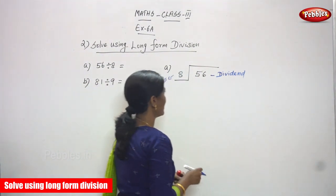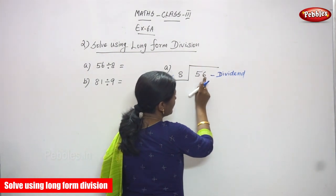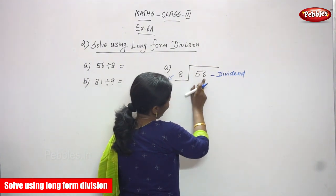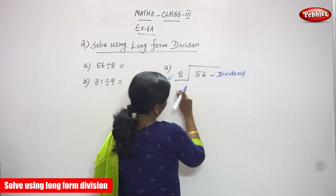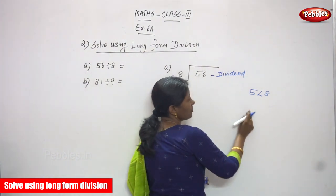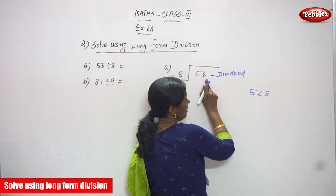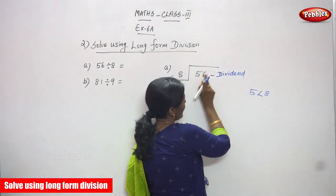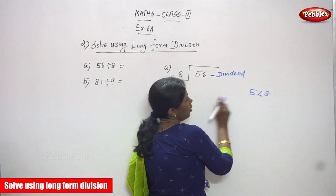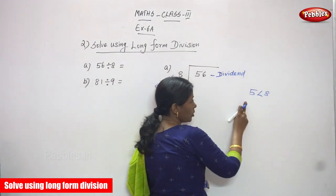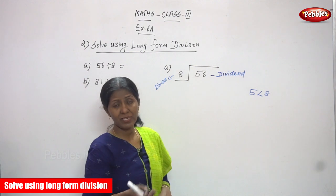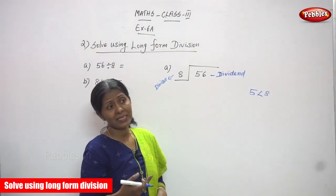First, you have to compare the 1s and 10s. The number is 6 ones and 5 tens — that is, 5 tens is called 50. You have to compare 5 and 8. But you must compare only the numbers, not the place value. 5 is less than 8, so it is not enough to divide by 8.